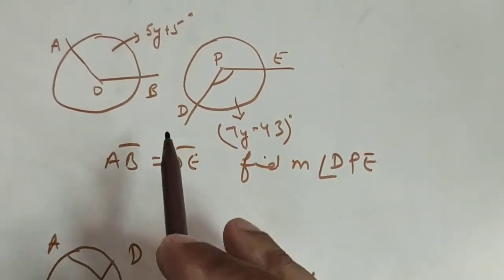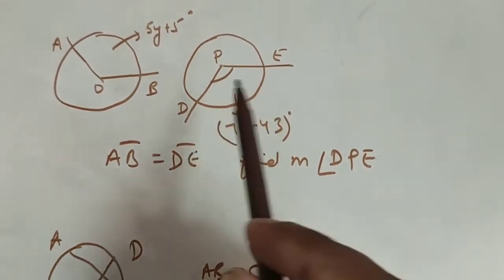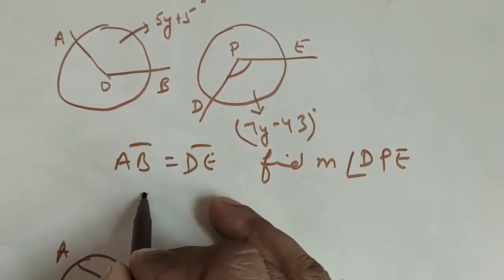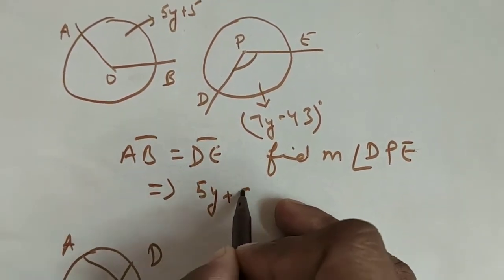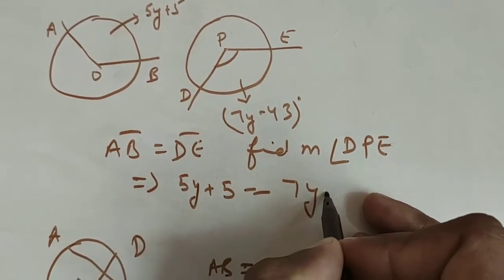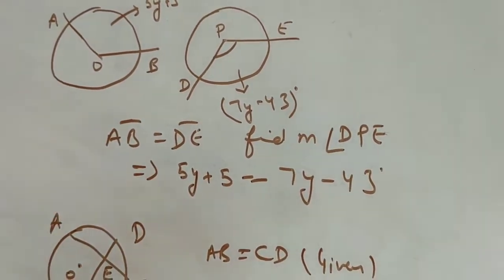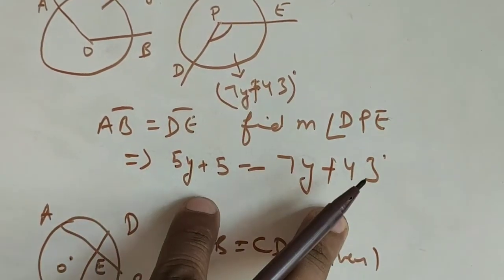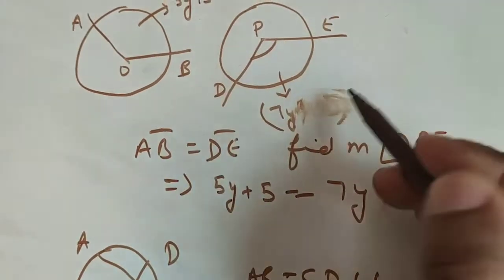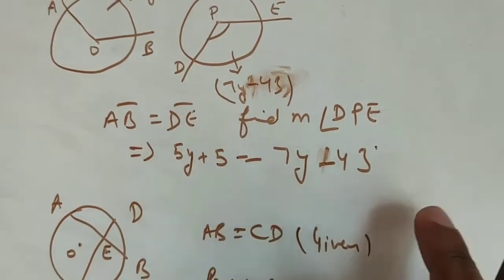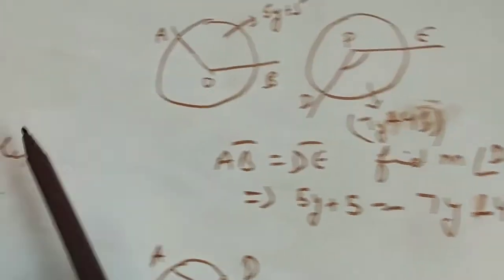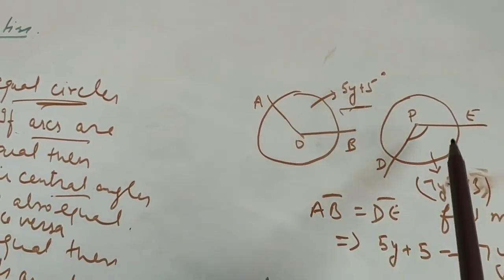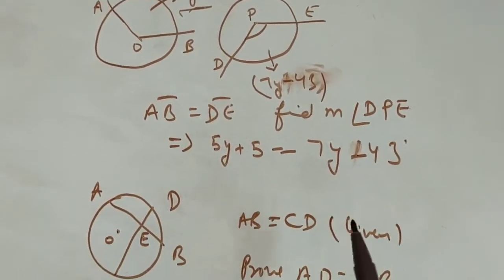Next we have two equal circles with equal radii. Arc AB and arc DE are the same. We know that in equal circles, if arcs are equal, their central angles are also equal. So the central angles give us: 5Y + 5 = 7Y − 43. Solving this equation gives us the value of Y.